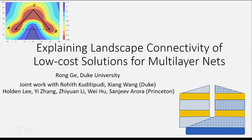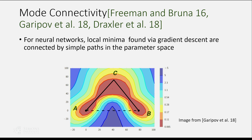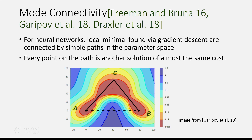What is this landscape connectivity property that I'm talking about? This is a phenomenon also known as mode connectivity that has been discovered in many recent papers. Roughly speaking, this is the property of some neural network solutions: local minima found by doing gradient descent or other popular optimization algorithms are actually found to be connected by simple paths in the parameter space.